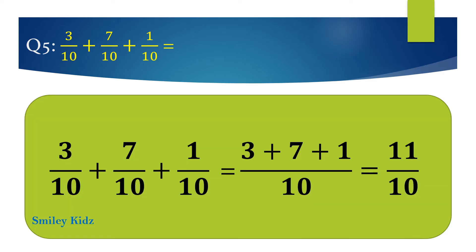The right answer is 11 by 10. To add like fractions, first add the numerators, then place the sum over the common denominator. 3 by 10 plus 7 by 10 plus 1 by 10 equals 3 plus 7 plus 1 by 10, which equals 11 by 10.